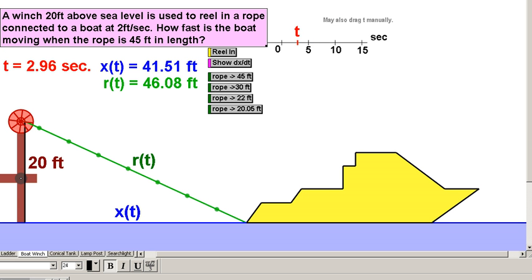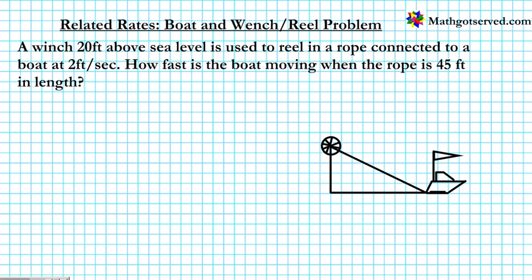Today students, in this clip we're going to be going over an example of related rates. Today we're going to be focusing on a boat and winch for a real problem. Let's go ahead and read the question and then try to solve the problem. It says: a winch 20 feet above sea level is used to reel in a rope connected to a boat at 2 feet per second. How fast is the boat moving when the rope is 45 feet in length?